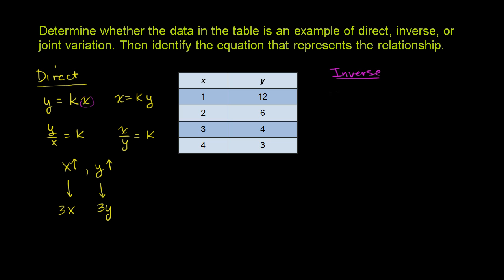Inverse variation, you have y being equal to some constant times 1 over x. So instead of an x here, you have a 1 over x. Or if you multiply both sides by x, you get x times y is equal to some constant. You could switch the x's and the y's around as well for inverse variation.